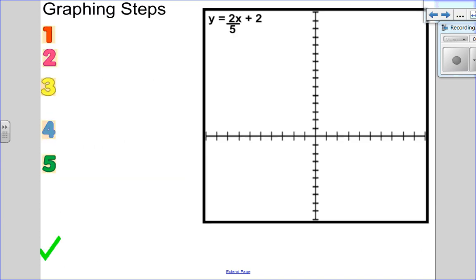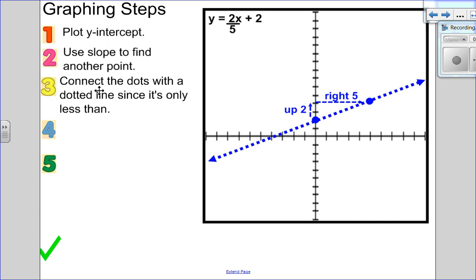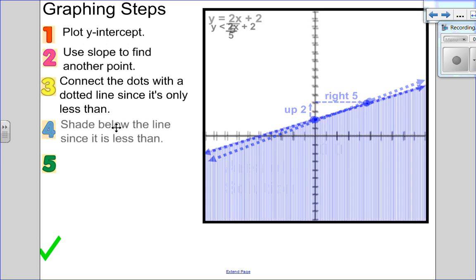Let's graph that. First thing I'm going to do is graph my boundary line. Start with your y intercept at 2. Then go to your slope of 2 fifths. I'm going to go up 2 right 5 to get another point. Then I'm going to connect the dots. But my original inequality didn't have an equal sign under it. So I'm going to use a dotted line. Now it said y is less than. So trace along your boundary line and you're always going to shade below.